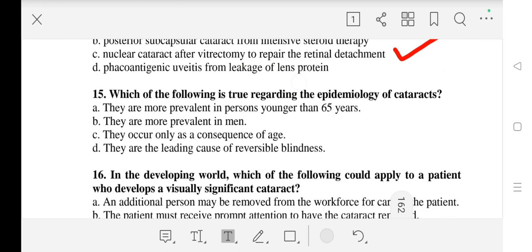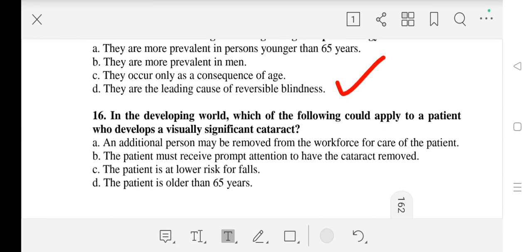Question number 15: Which of the following is true regarding the epidemiology of cataracts? The right answer is D - they are the leading cause of reversible blindness. Question number 16: In the developing world, which of the following could apply to a patient who develops a visually significant cataract? The right answer is A - an additional person may be removed from the workforce for the care of the patient.